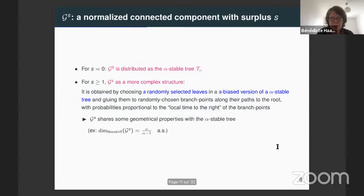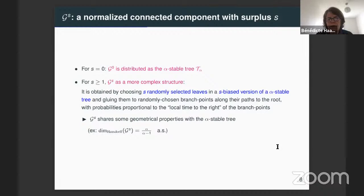We want to describe this graph G_S. For S equals zero, when there is no surplus, this graph is simply the alpha-stable tree, an object we already know very well. But for S larger than one, G_S has a more complex structure. We know from Christina's result that it's built from a biased version of the alpha-stable tree.